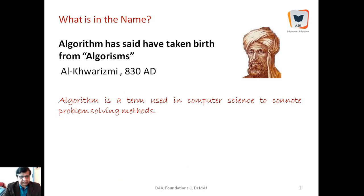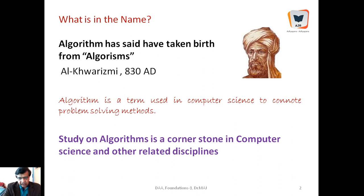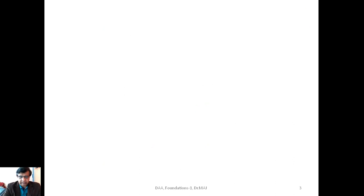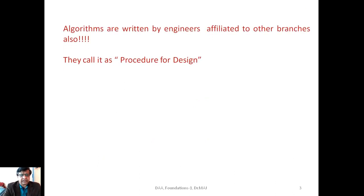The study of algorithms is a cornerstone in computer science and information science, and is core to diploma, BSc, and MSc programs in computer science and information science. Algorithm has been made a core subject in almost all branches of computer science and related disciplines. The study of algorithms is called algorithmics.